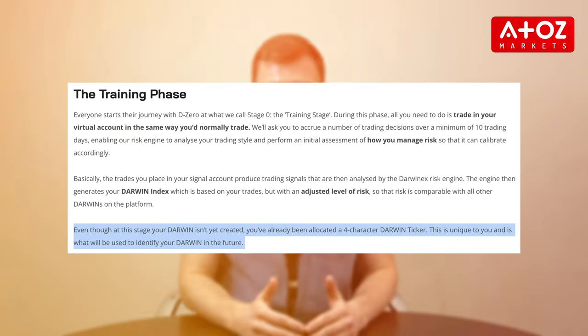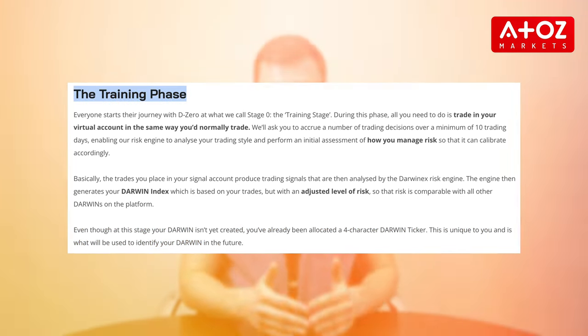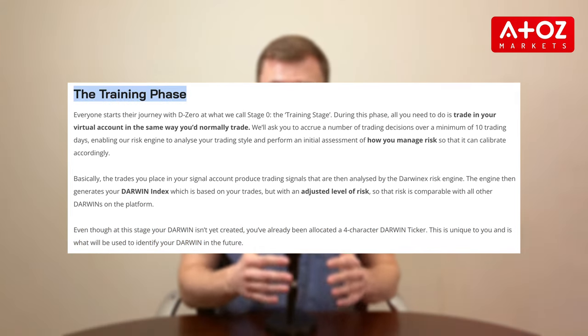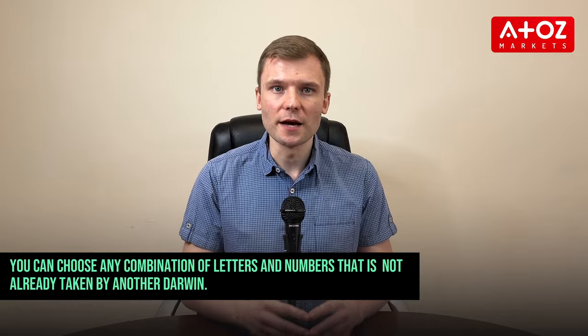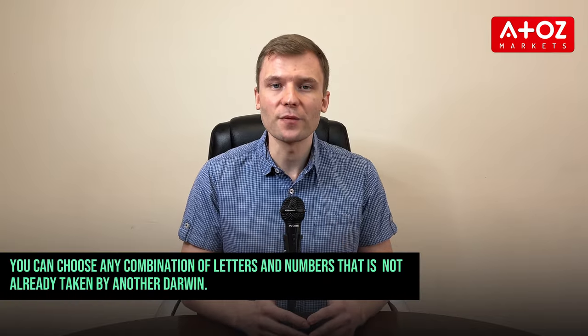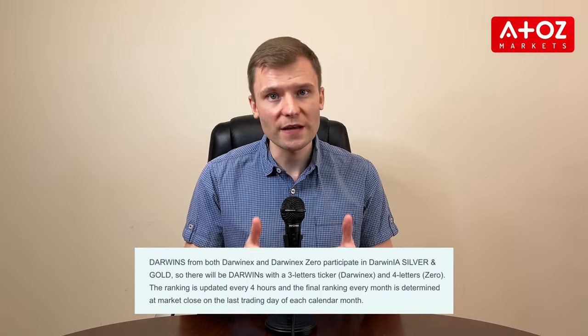You will receive a unique Darwin ticker — a four-character code that identifies your Darwin index. You will receive your Darwin ticker during the trading stage and can change it once before your Darwin index is created. You can choose any combination of letters and numbers not already taken by another Darwin. Your Darwin ticker will be used by Darwinia and by investors when choosing Darwins to invest in.